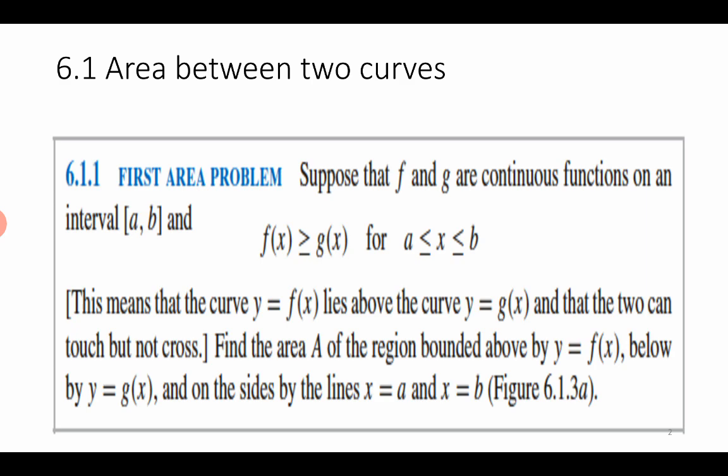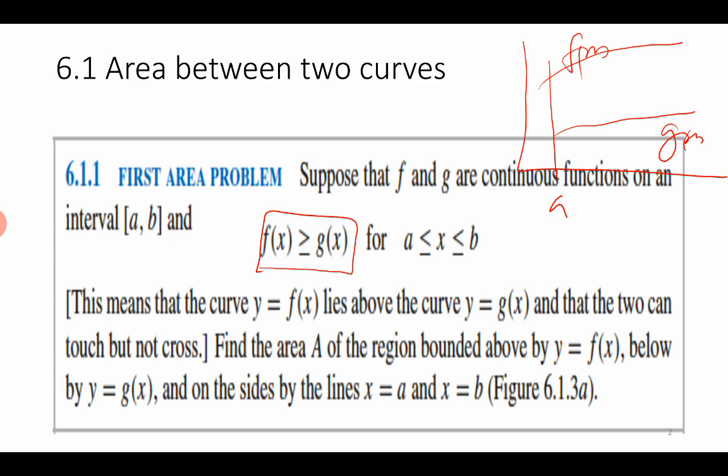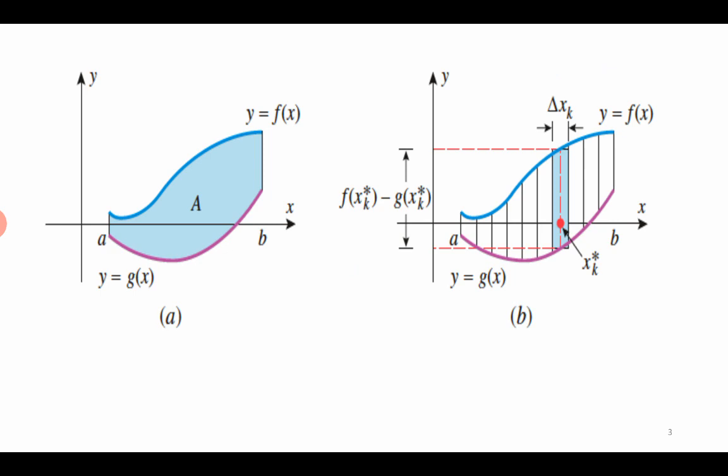We will start with the area between two curves. The problem we are going to discuss is finding the area of the portion lying between two curves F and G, where the condition is F is greater than G — so the curve F is lying above the curve G. In the x-axis, this is between A and B, and we are supposed to find the area between these two curves. Before we go further, I am going to find the formula for finding the area between two curves in the interval A and B.